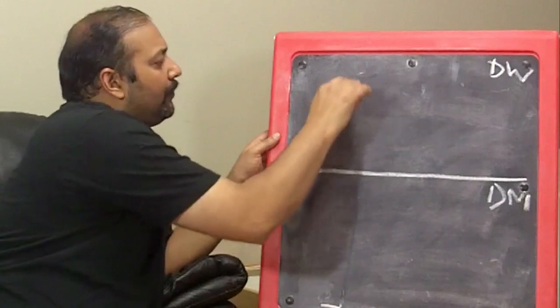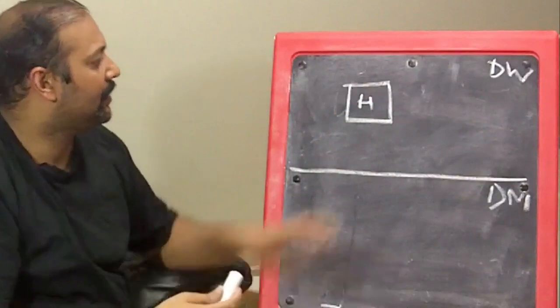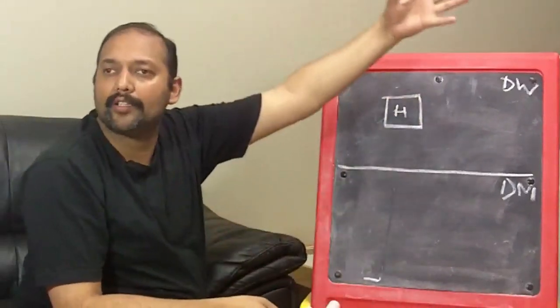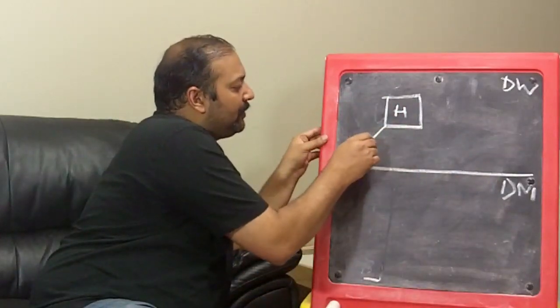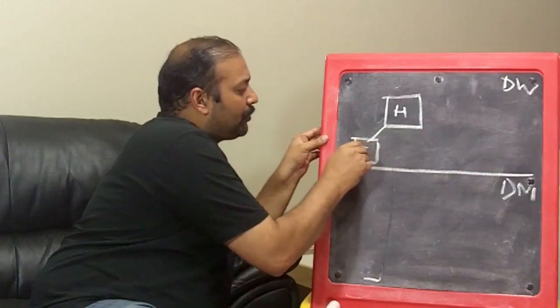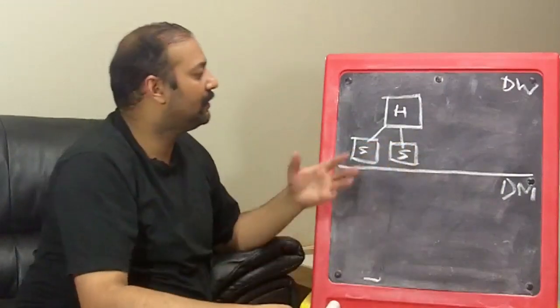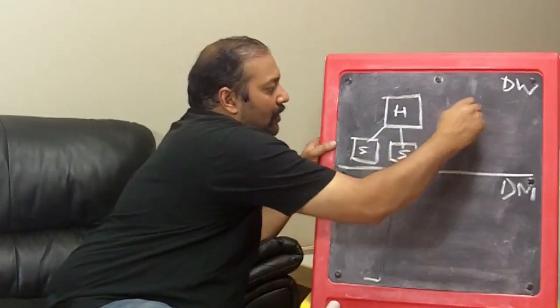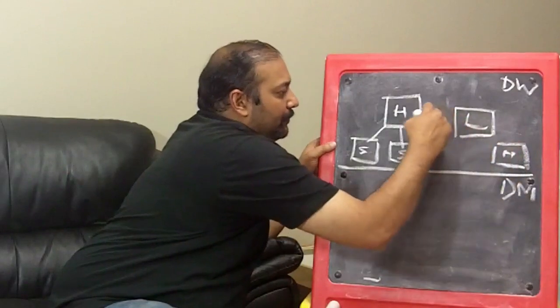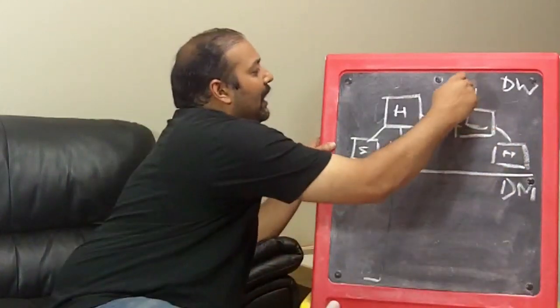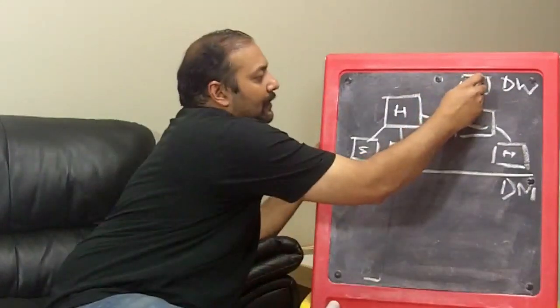So, the data vault is built up of hubs, which are basically just a collection of business keys. So, a hub would be your business keys across your entire organization, across your systems for a certain type of thing. And the descriptive data, it is brought in in satellites, and it's split by rate of change, it's split by type of data, and then all transactions are brought into links. So, between a link, you'll have two hub tables, and links may have their own description and effectivity dates, and so they'll have link satellites as well.